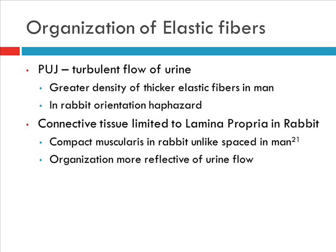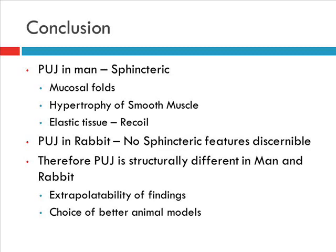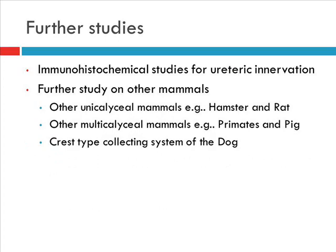Regarding the elastic fibers: the UPJ is a transition from a wide lumen into a narrow element, so there is quite a bit of turbulent flow there. The gradient of elastic tissue may explain this and may even help in sphincteric function, acting as a buffer. In conclusion, the UPJ in man exhibits sphincteric properties; however, in the rabbit, these sphincteric features are not discernible. Therefore, in terms of studying functional obstruction at the UPJ, the rabbit or any other unicalysal mammal may not be the best animal model choice, whereas smaller mammals that have multicalysal kidneys may be better choices. Thank you.